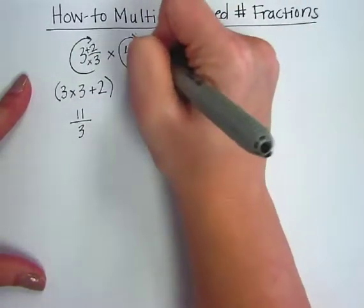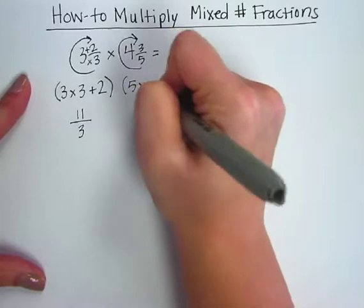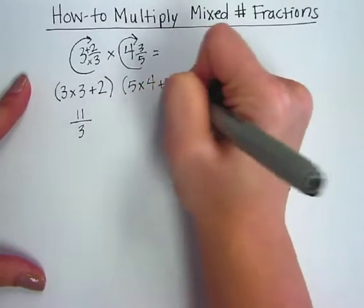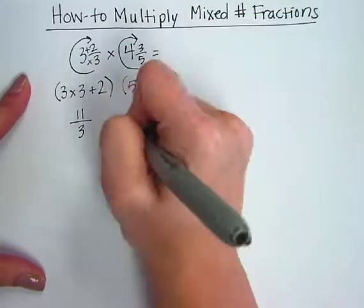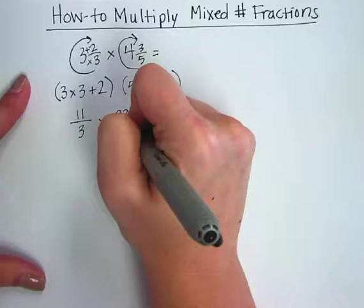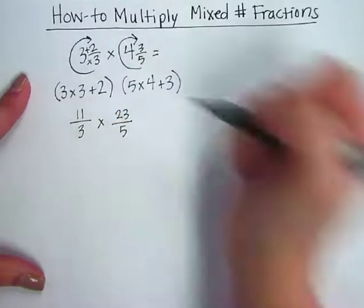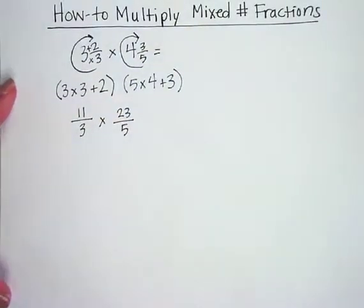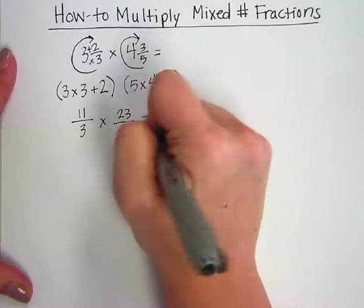The next one, I'm going to do it a little quicker this time. 5 times 4 plus 3 equals 23. Use our original denominator of 5. So now both of these are improper fractions and we're ready to multiply.